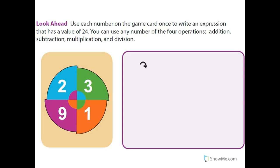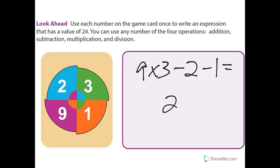Nine times three is 27, minus two is 25, minus one equals 24. In this chapter we're going to do things like this — multiply and subtract, divide and add — and figure out some things about number properties in this lesson and throughout the chapter.